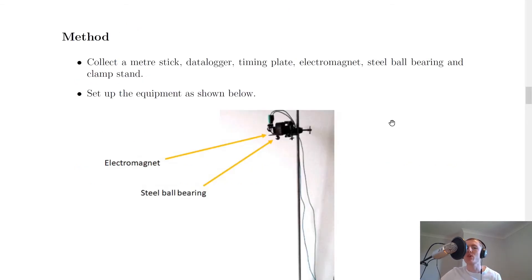So the method that I'm going to take you through here is using an electromagnet and a steel ball bearing. But it should be noted that you might have done a different experiment in class, and there are other ways of doing this, such as using the G ball where you drop the ball and it measures the acceleration for you. So it says here to collect a meter stick, a data logger, timing plate, electromagnet, steel ball bearing, and a clamp stand. So that's the equipment we're using.